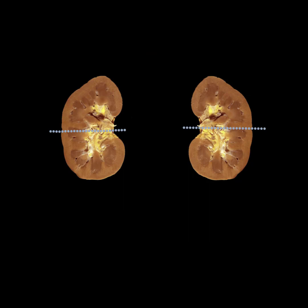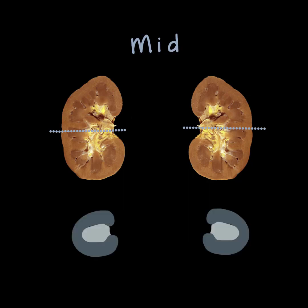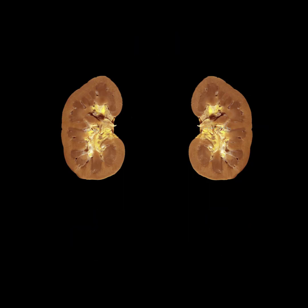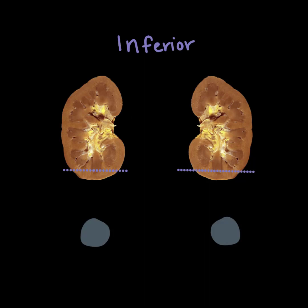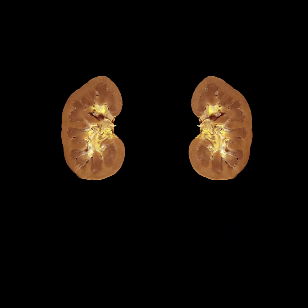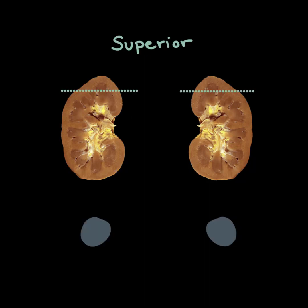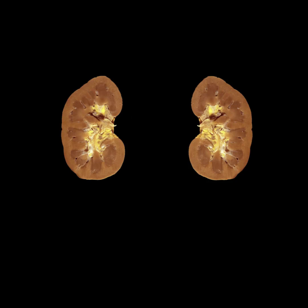The midsection takes on more of a C-shape with the hilum break facing the patient's center. The inferior pole looks very similar to the superior pole but without the liver and spleen. It should be round with little to no renal sinus.